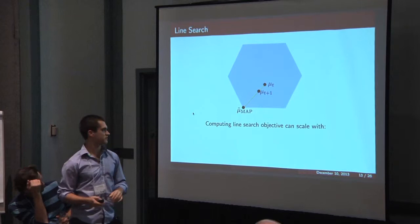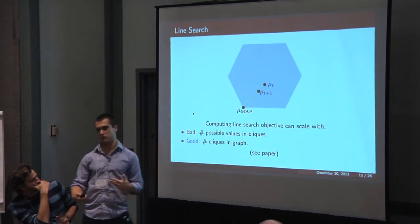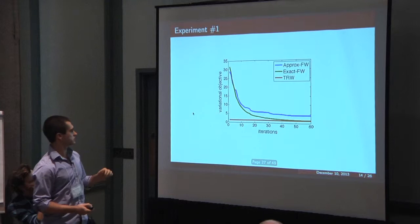But basically in the paper I show that you can actually do it in a nice way that scales where the complexity scales with the number of cliques in the graph, not the number of possible values those cliques take on. So the actual cost is a lot less than it would be naively.